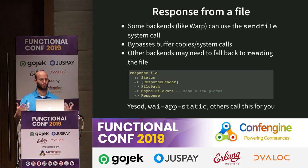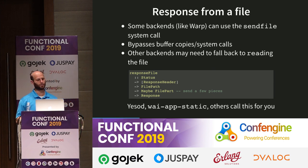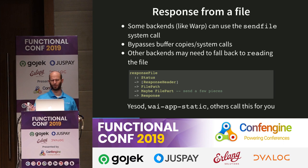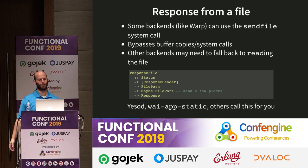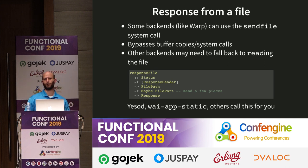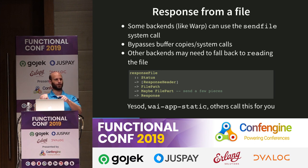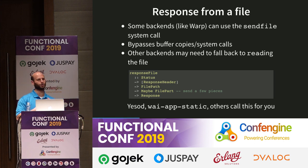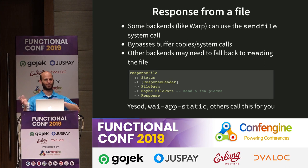You can also generate a response from a file. Warp has built-in support for this via the sendfile system call — a cool optimization on most Unix systems that allows you to bypass going through user space for copying data from a file directly to a socket. But there are cases where you can't use this, like with Warp TLS, because you can't copy unencrypted data directly to the network socket. Some backends don't have support for this and will fall back themselves. You, as the user of WAI, don't have to worry about that — you just say 'I want a file, serve the file.'